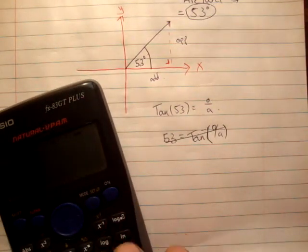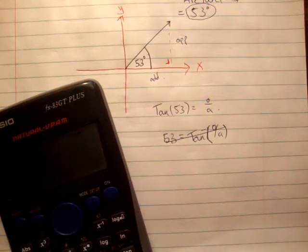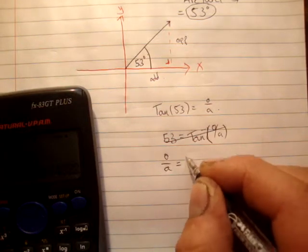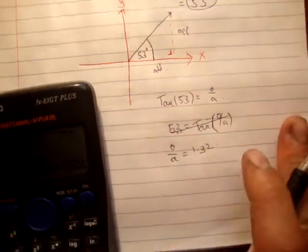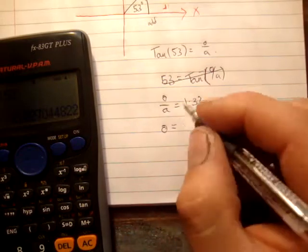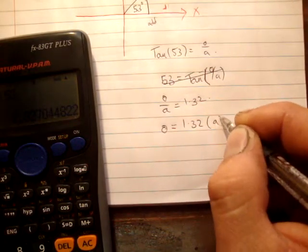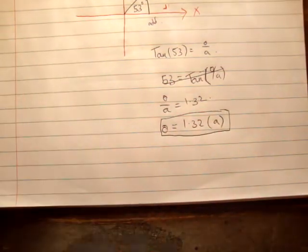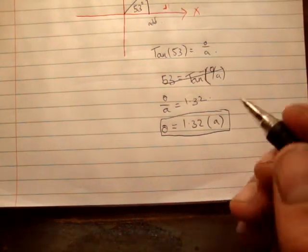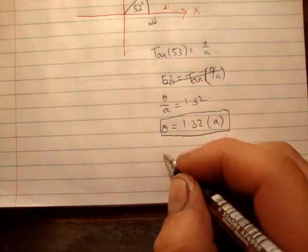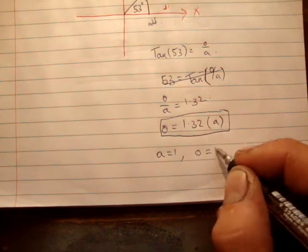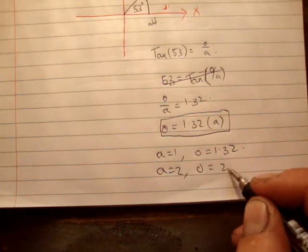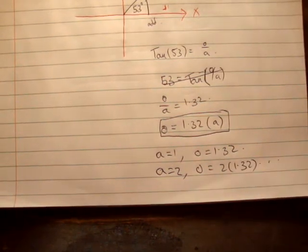So opposite over adjacent is equal to 1.32. Therefore, the opposite is equal to 1.32 times adjacent. And that's all that seems to matter. Opposite is 1.32 times adjacent. So you could say that A is equal to 1 and O is equal to 1.32. You could say A is equal to 2 and O is equal to twice 1.32. You could say any of those, and they all match.